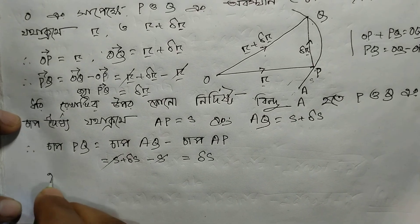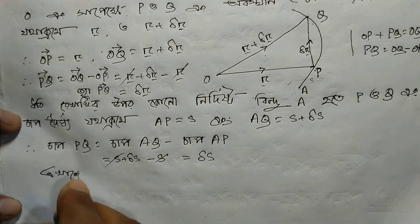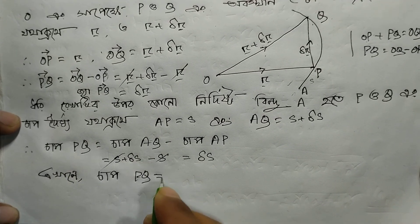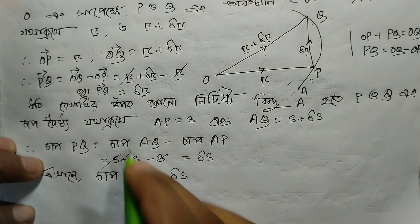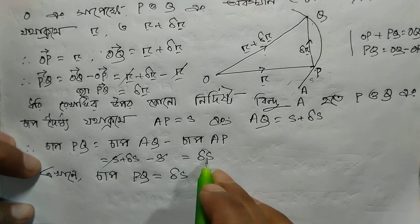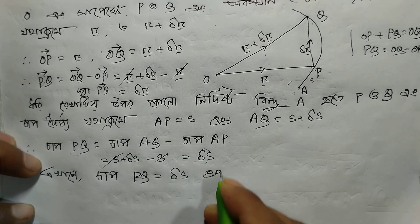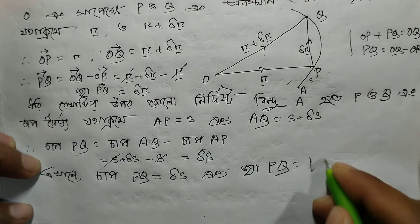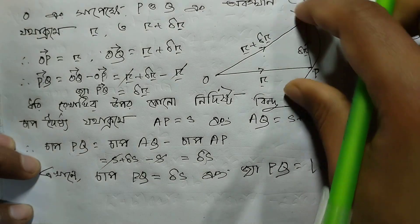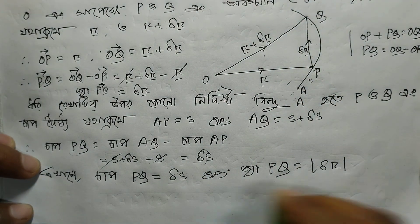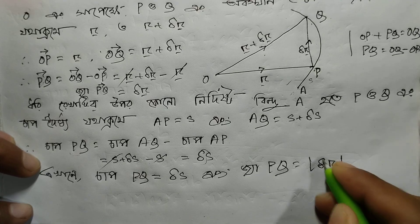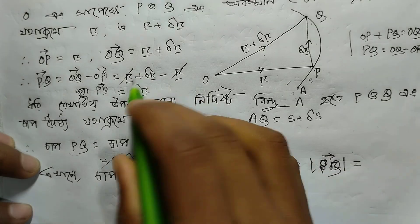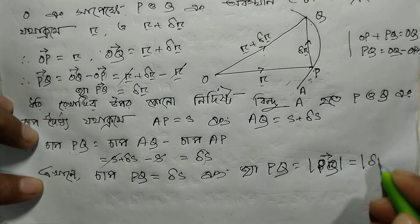Here we identify that the arc length PQ, that is del s, approaches zero. So we write: the limit as del s tends to zero equals the modulus of del r. Modulus of PQ — that is, modulus of PQ — equals del r. And we write: modulus del r, and del r vector.